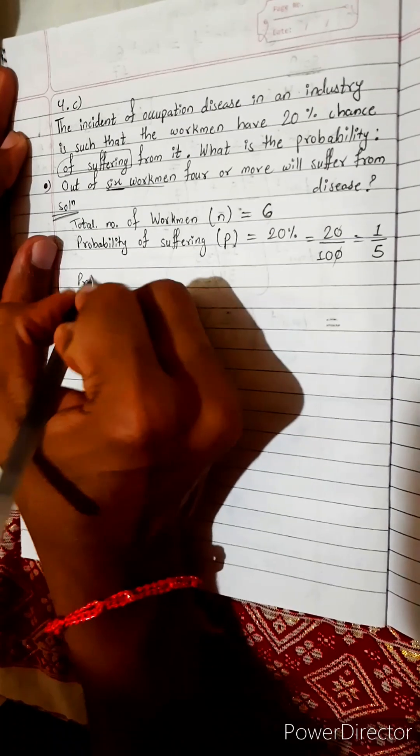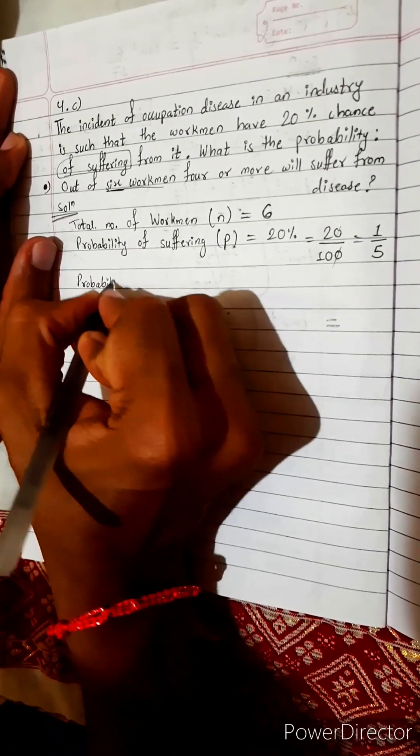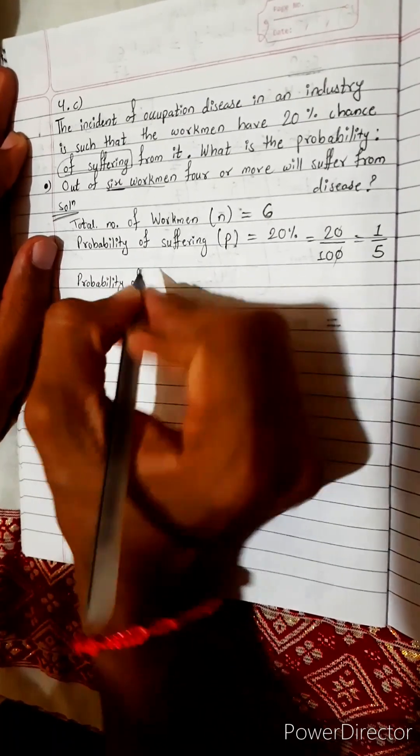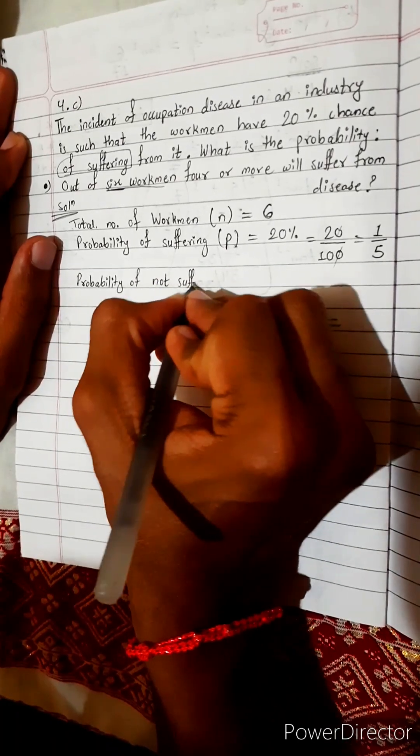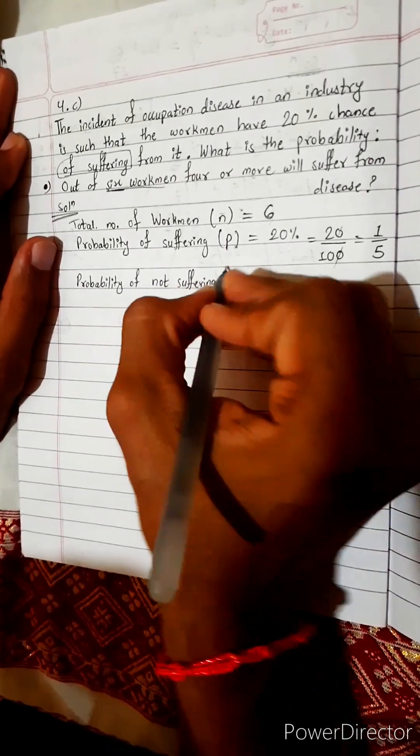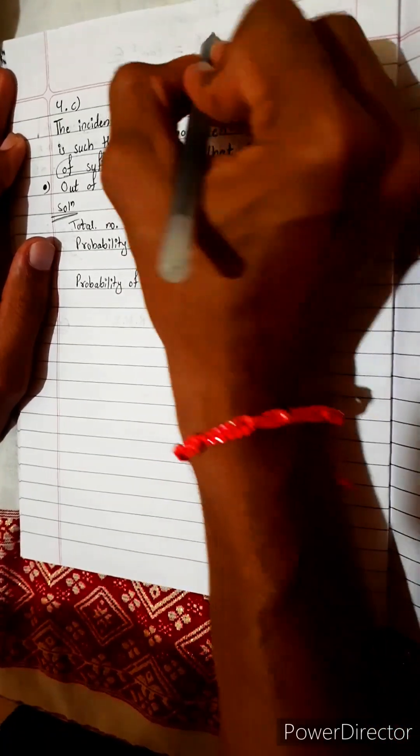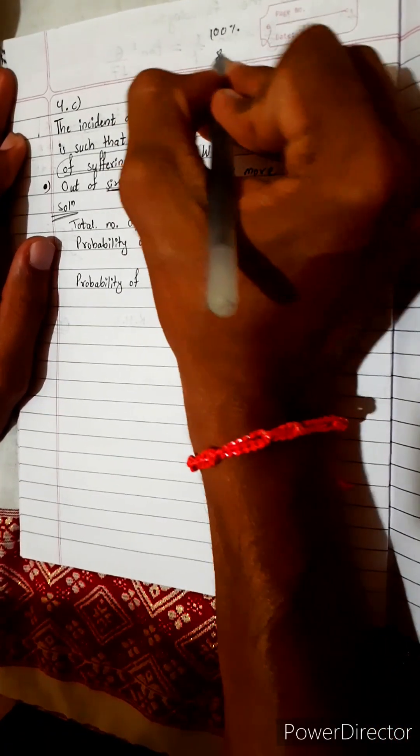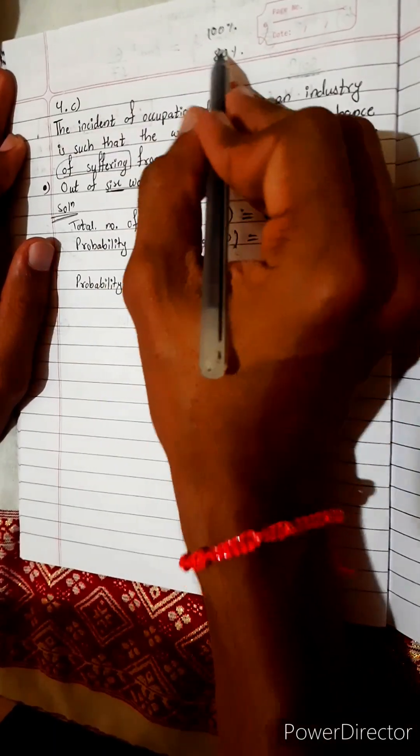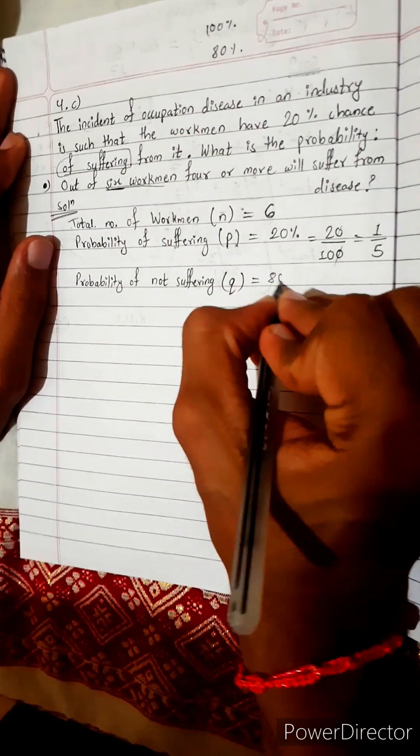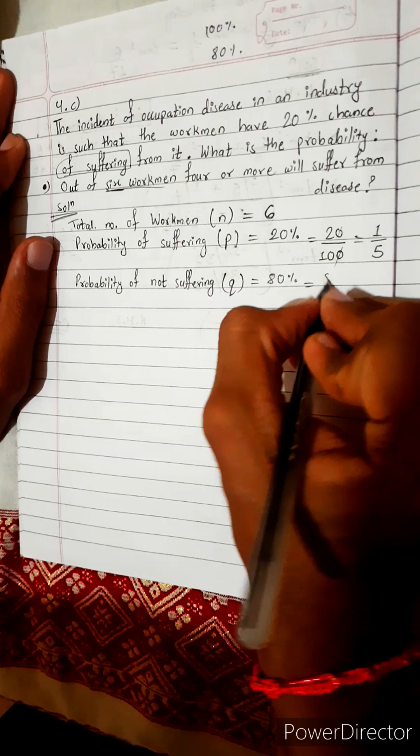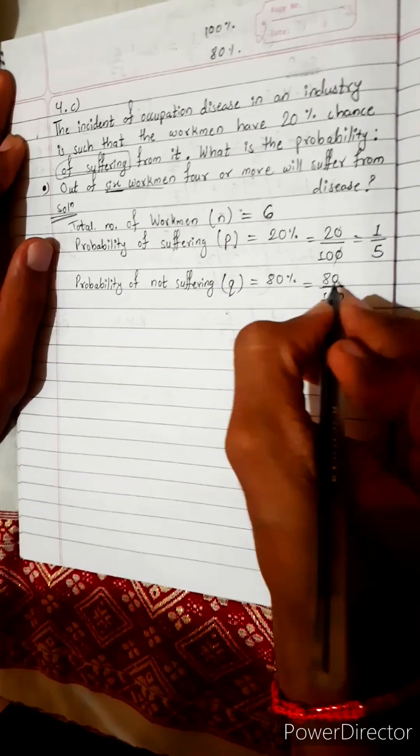Then probability of not suffering, it will be Q. Now 20% out of 100%, there are 80% remaining. So let's write 80%, this is 80 per cent, cent means 100, so it is 4 by 5.